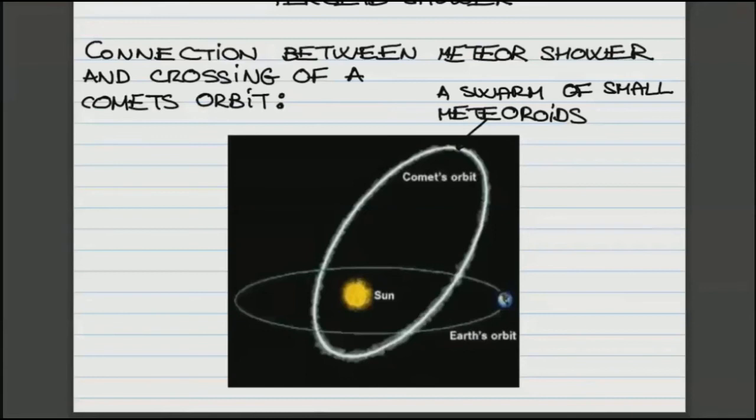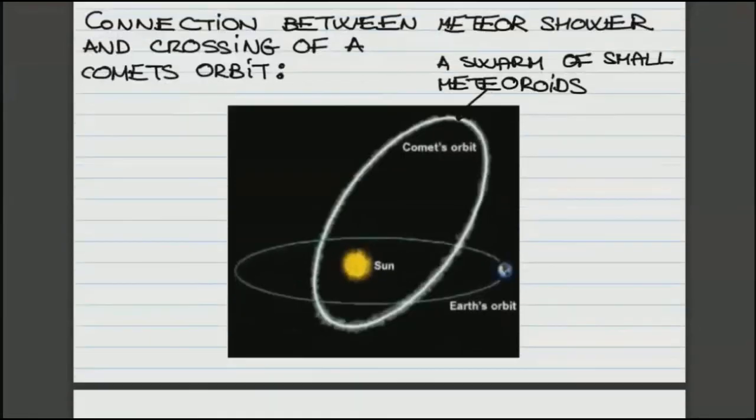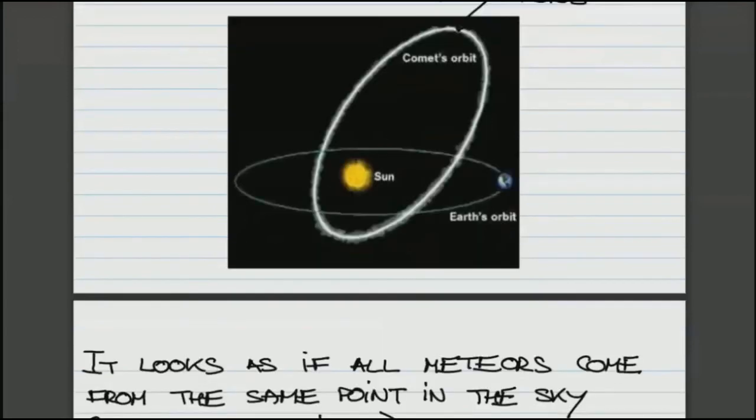So these dates for different showers indeed coincide with the dates when the Earth, in its revolution around the sun, crosses those orbits. So clearly, that tells us that these particular meteoroids producing meteor showers have to be related to the comets. They are not pieces of asteroids.